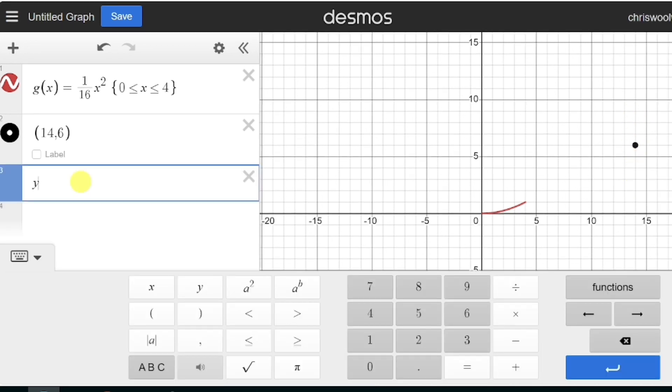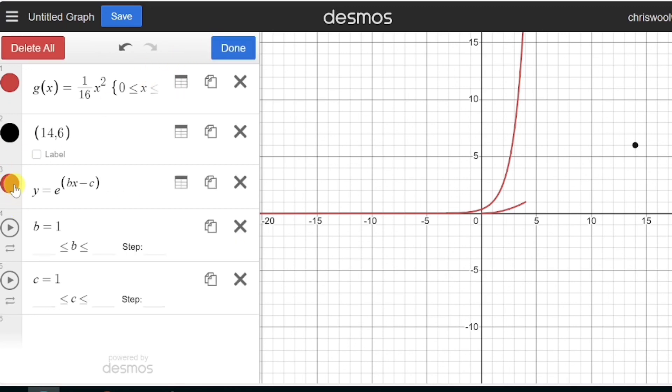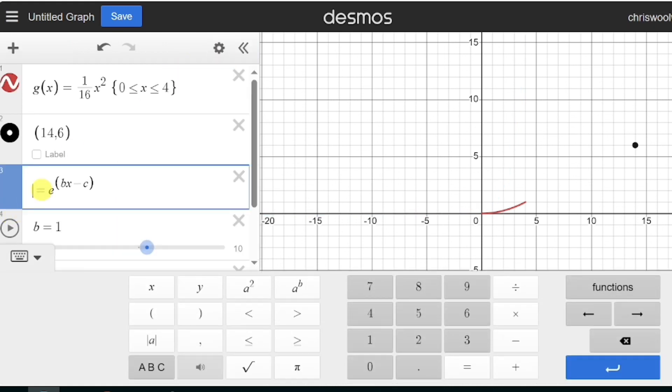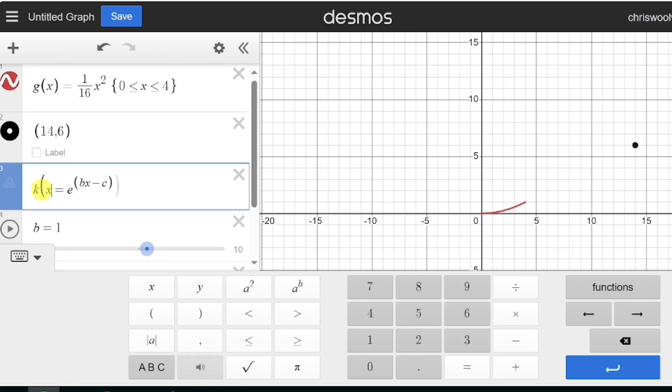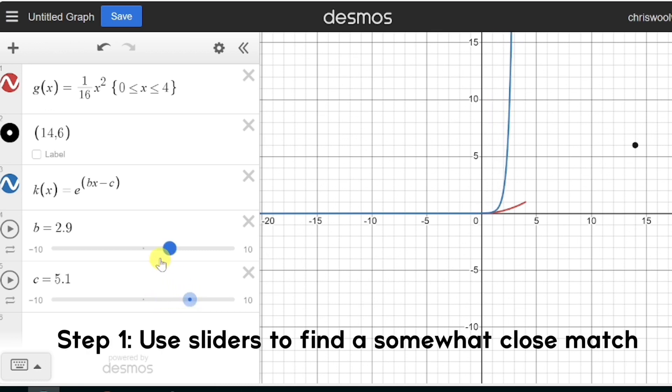The first thing we're going to do is write y equals e to the power of bx minus c in brackets, and we're going to add sliders on Desmos. We might just quickly change the color of this graph and I'm just going to make this k of x as well. Basically if I move these sliders, notice that it changes the shape of my graph. So step one of this whole procedure is we want to find something that's going to kind of fit, and it might take a little bit of mucking around with sliders.